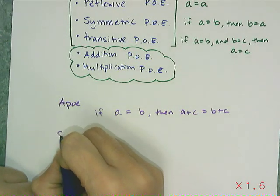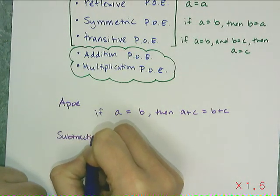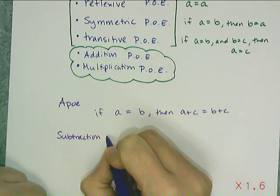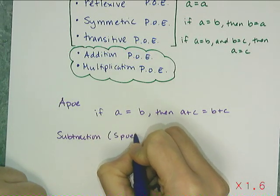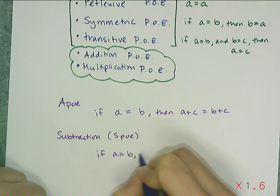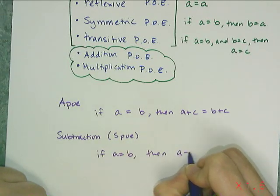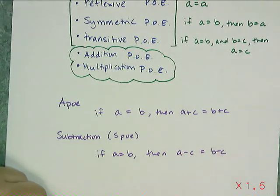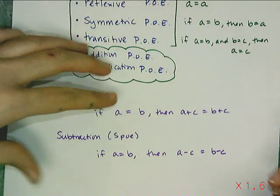Now, subtraction has a version of the property of equality, and we're going to call this one SPO. And it says if A equals B, then A minus C equals B minus C. And it says I can take away the same quantity from both sides of the equation, and it's still going to be equal.